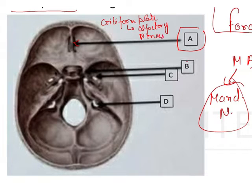This cribriform plate is a part of the ethmoid bone, and it separates the anterior cranial fossa from your nasal cavity.